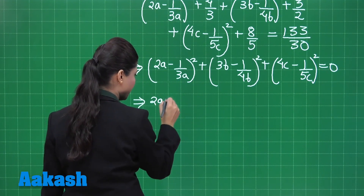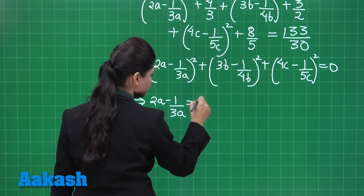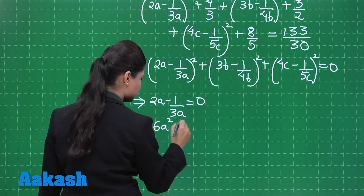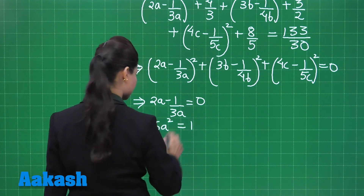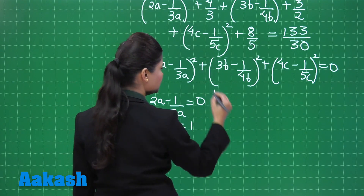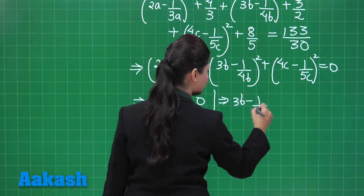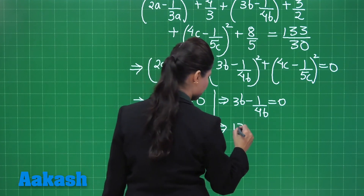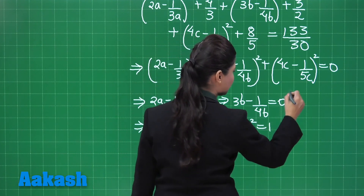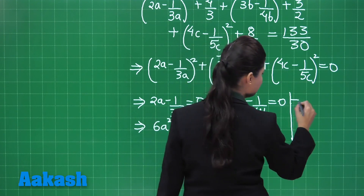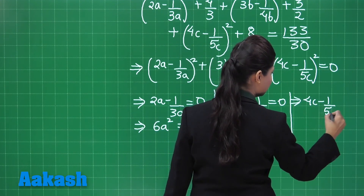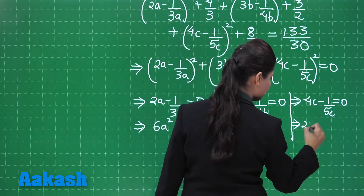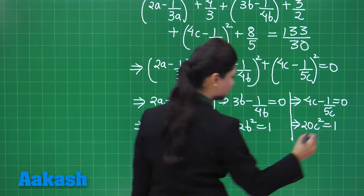This is possible if and only if all three of them are individually equal to 0. So I equate each bracket to 0. From 2a − 1/3a = 0, simplifying gives 6a² = 1. Similarly, from 3b − 1/4b = 0, it results in 12b² = 1.